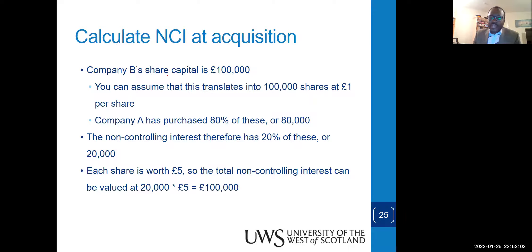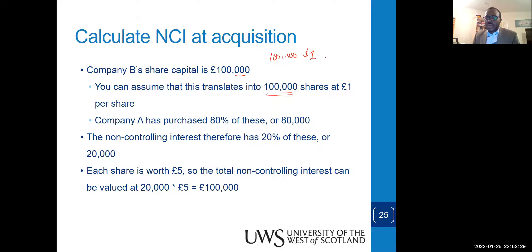Now the NCI valuation. The share capital of the acquired subsidiary is 100,000 shares at a par value of 1. The question will clearly state it as 100,000 one-dollar par value ordinary shares. The company has purchased 80% of these for the parent, and the non-controlling interest holds 20%.